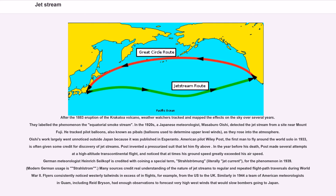German meteorologist Heinrich Seilkopf is credited with coining a special term, Strahlströmung, literally jet current, for the phenomenon in 1939. Many sources credit real understanding of the nature of jet streams to regular and repeated flight path traversals during World War II. Flyers consistently noticed westerly tailwinds in excess of in flights, for example, from the US to the UK. Similarly in 1944, a team of American meteorologists in Guam had enough observations to forecast very high west winds that would slow bombers going to Japan.